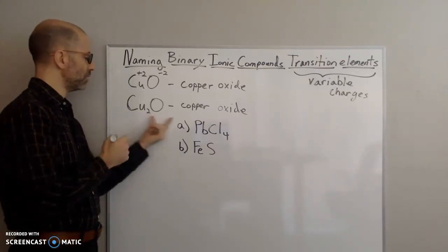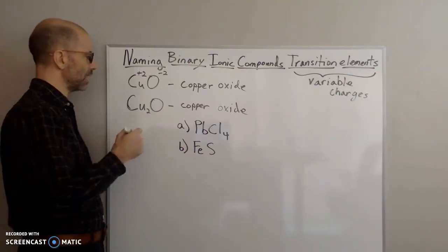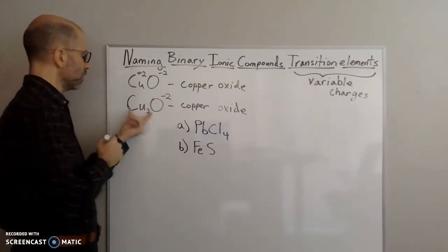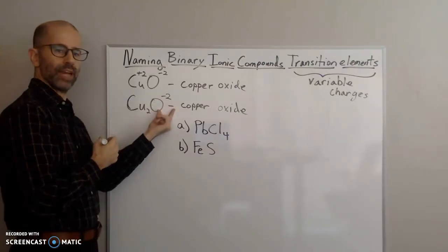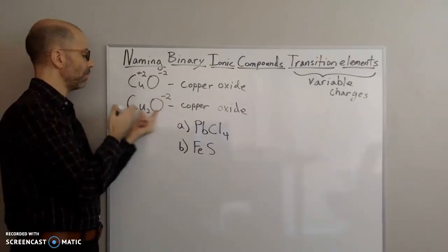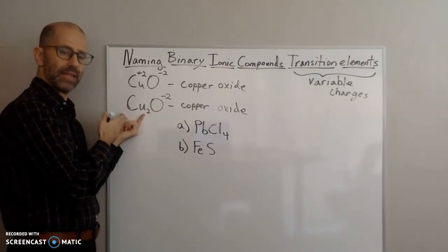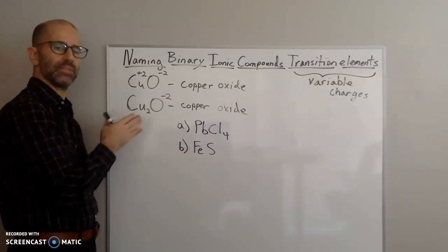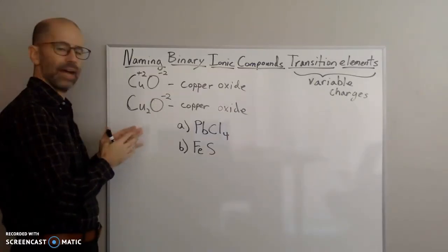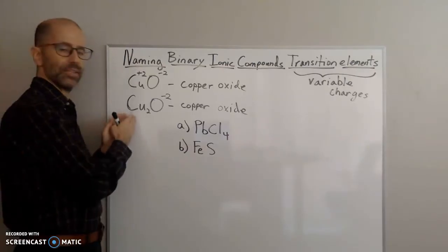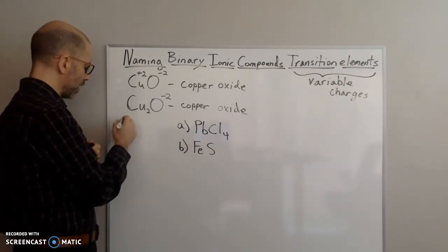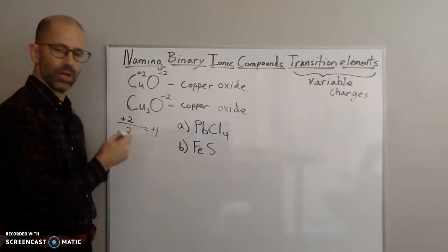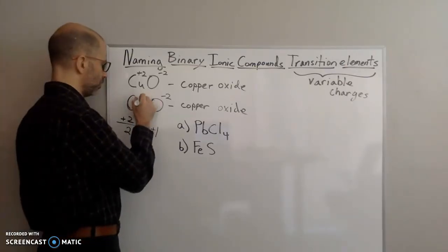If I do the same thing for Cu2O, I have one oxygen with a negative two charge. To balance out that negative two, I need a total positive charge of positive two. But now I have two atoms of copper, so that positive two charge has to be divided equally among those two atoms. If I divide positive two evenly among the two atoms, that gives each copper atom a plus one charge.